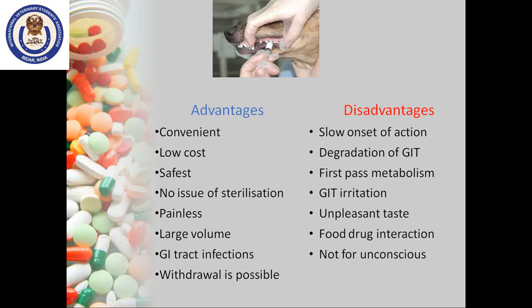Advantages of oral route: It is convenient and low cost. It is the safest route, as very less harm and injury occurs to the animal. There is no issue of sterilization. It is painless and doesn't cause any pain. Oral route is suitable for treating GI tract infections like gastrointestinal parasites. Withdrawal is also possible — even if any hazardous substance is administered, it can be removed by vomiting or reverse reflex.